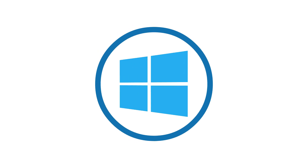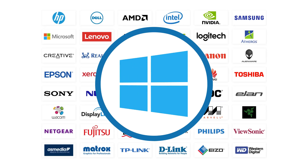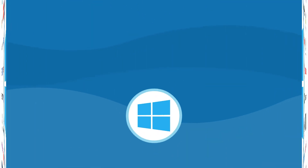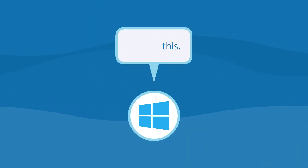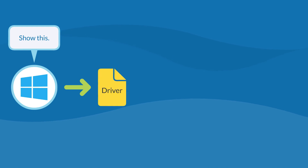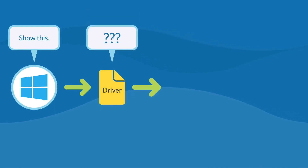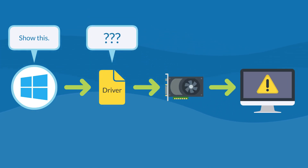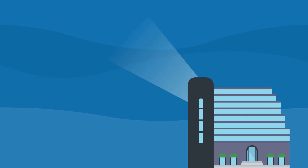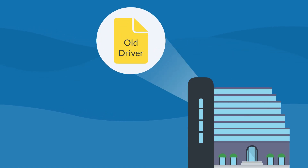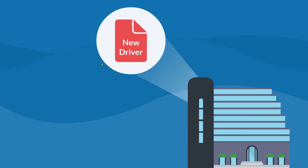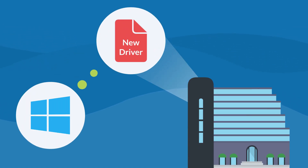Drivers come packaged with Windows, but they're developed by the device manufacturer, not by Microsoft. Now, let's say Microsoft changes the way Windows talks to your screen. You'll suddenly get display errors because your driver won't be able to translate the new command. So your video card manufacturer has to change the driver and get the new version into the next Windows update.